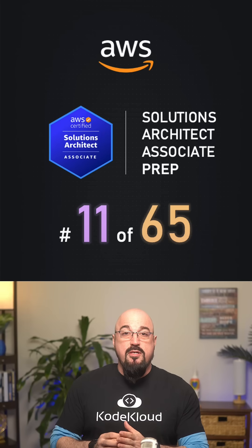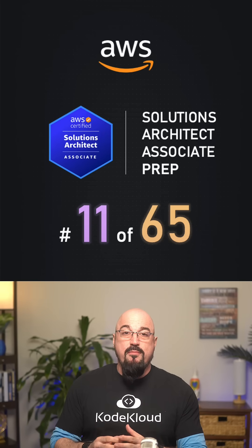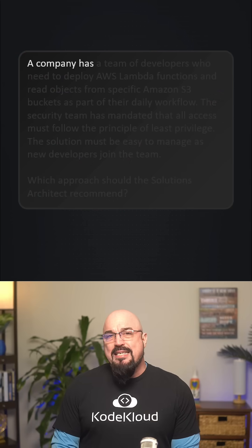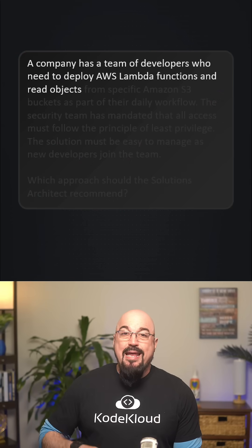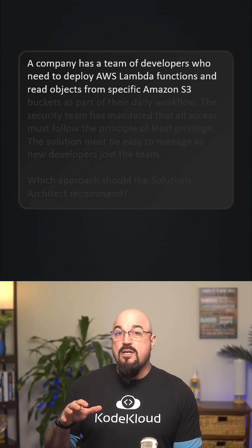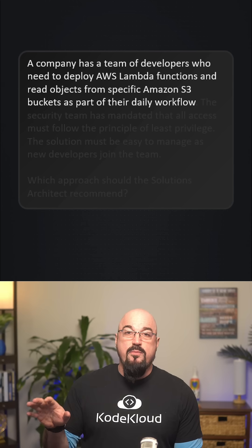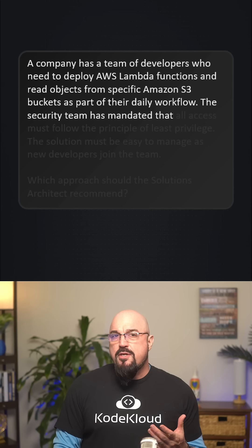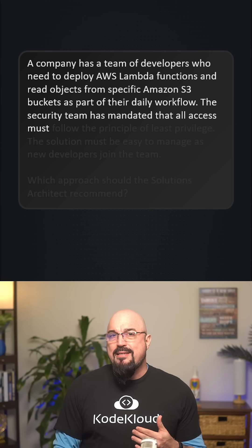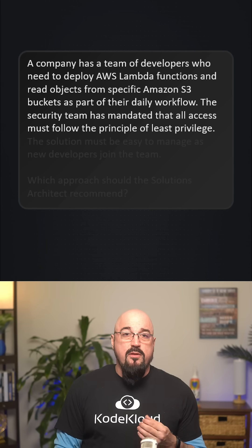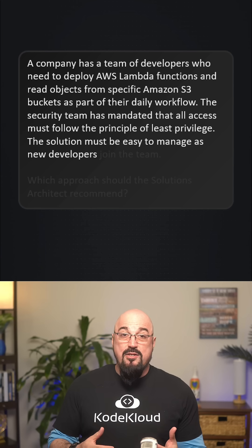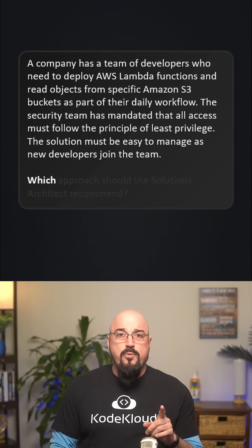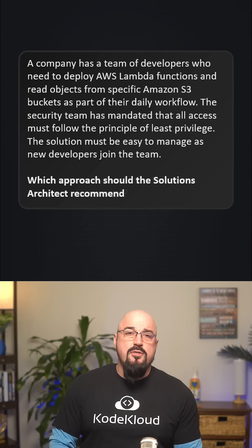AWS Solutions Architect Associate Certification Prep, Question 1165. A company has a team of developers who need to deploy AWS Lambda functions and read objects from specific Amazon S3 buckets as part of their daily workflow. The security team has mandated that all access must follow the principle of least privilege, and the solution must be easy to manage as new developers join the team. Which approach should the solutions architect recommend?